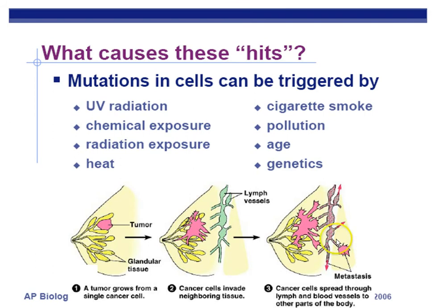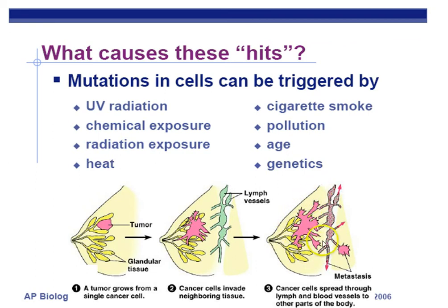The worst-case scenario is metastasis — one of the scariest words in the English language. When some cancer cells break off from the main tumor, they can spread to the brain, heart, lungs, toes, anywhere in the body, and form their own tumors. Even if you cut out all the cells, you could still have cancer because it can come back. Someone might be in remission, but it's very difficult to capture all the cells that might have broken off. The chance of survival goes down significantly once cancer has metastasized — catching it early is critical.